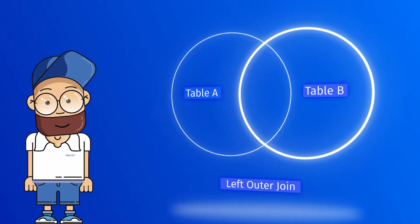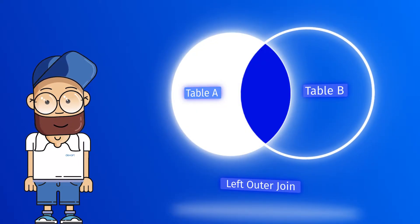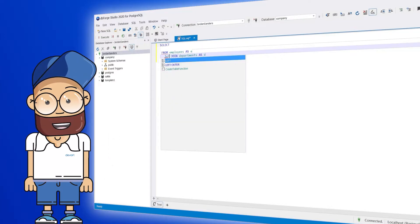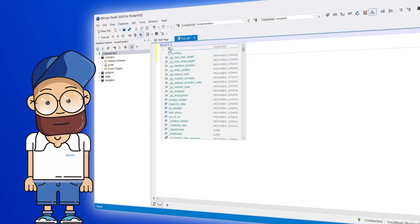Now let's move to the left outer join. Left outer joins return all records from the left table and the matching records from the right table. In case there is no match, those records will be shown with null values.